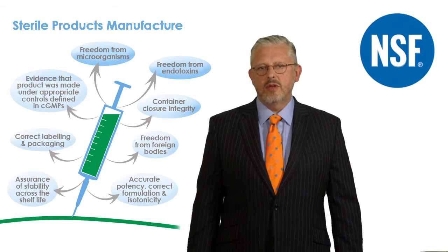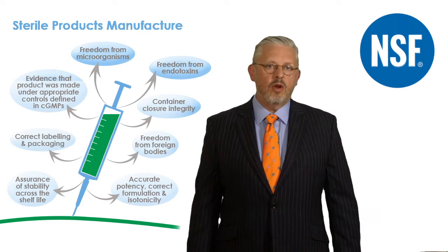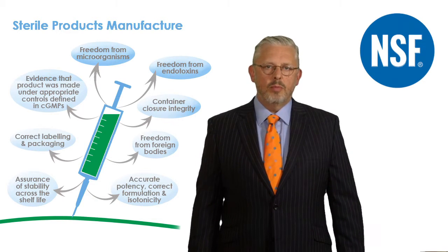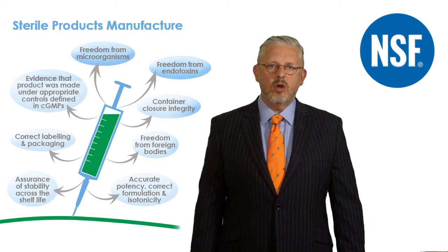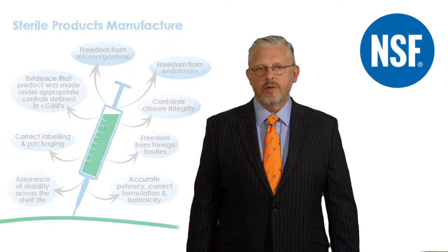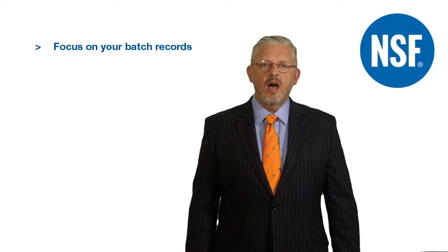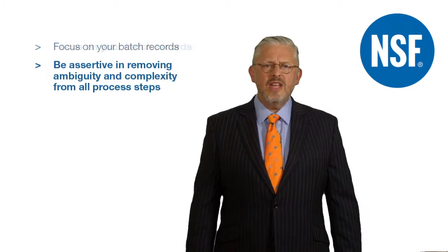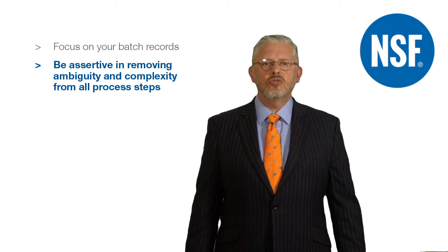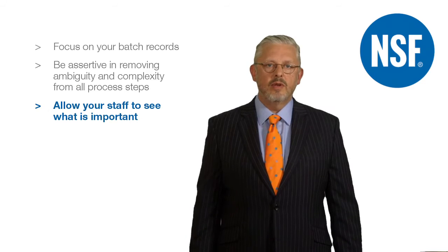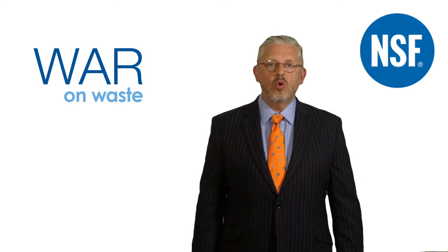How can I build these attributes into the product? Firstly, focus all of your qualification and validation activities on assuring each attribute by using good design, proportionate laser-focused validation studies, and an ongoing monitoring programme devised using a risk-based approach. Keep ICHQ9 close at hand and only spend your finite resources on what is truly important. Focus your batch records so that they're crystal clear, unambiguous and easy to follow. Be assertive in removing anything that doesn't contribute to doing things right first time, and allow your staff to see at a glance what is important. Because if it doesn't add to the assurance of these attributes, it is waste — and the best firms always wage war on waste.